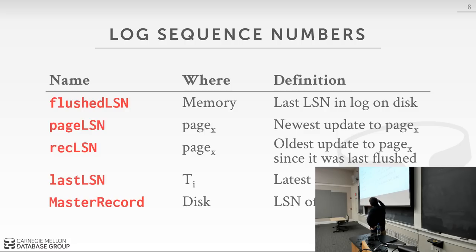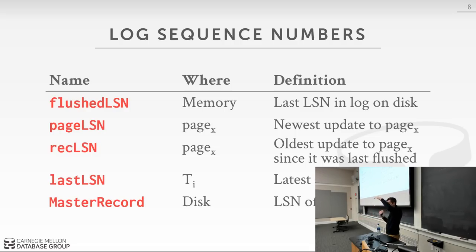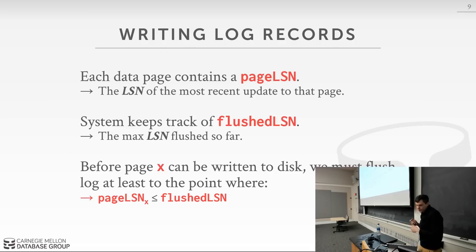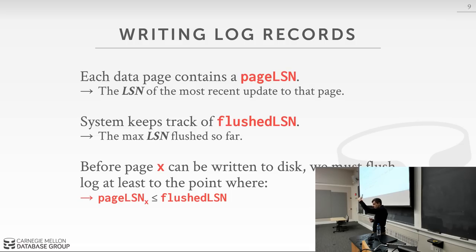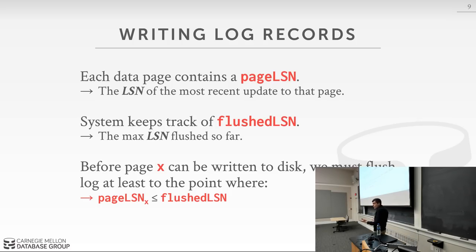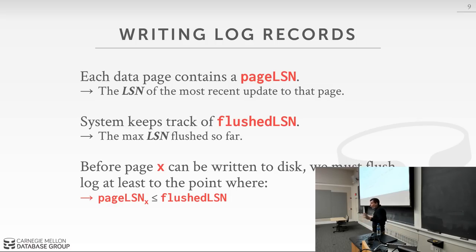The first LSN type is the flushed LSN, kept in memory — the last LSN flushed to disk in the write-ahead log. Inside each page, we have the page LSN — the last LSN that modified the page — and the rec LSN — the oldest LSN that modified the page since it was last flushed to disk. We also track the last LSN per transaction, to jump back and find log records for that transaction. And there's a master record on disk recording the location of the last successful checkpoint.